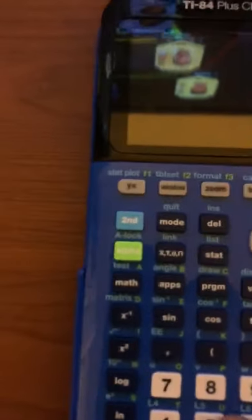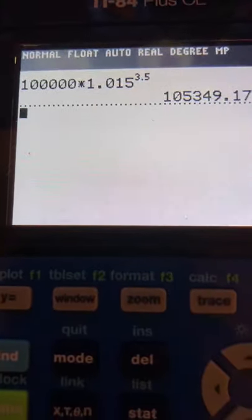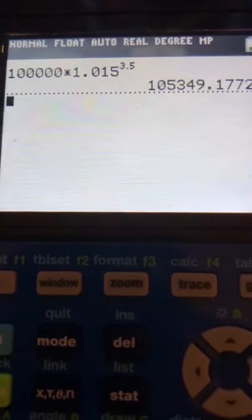Then you put it in the calculator: 100,000 times 1.015 to the 3.5 power.